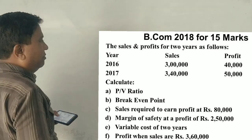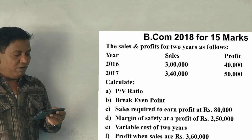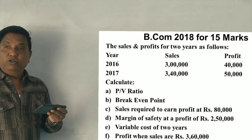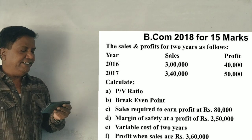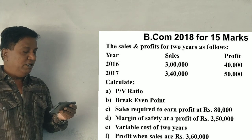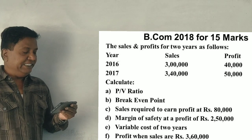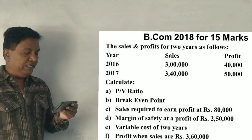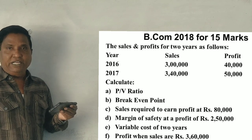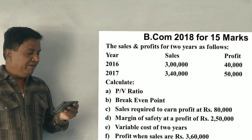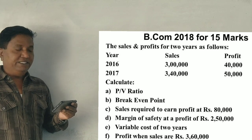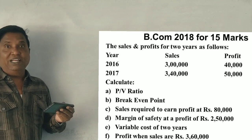Guys, 2018 Alokuda marginal costing, 11.15 mark question is here. The question provides sales and profit for 2 years as below: 2016-17, sales 3 lakhs and 3 lakh 40, profit 40,000 and 50,000. Calculate PV ratio, break-even point in rupees and units.